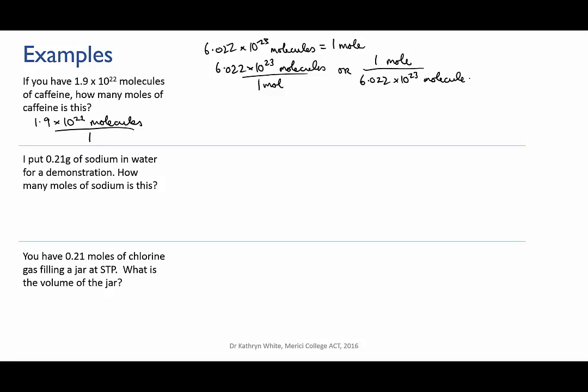We can have 6.022 times 10 to the 23 molecules over 1 mole, or we could write it the other way up. It is completely equivalent either way. Which version you use depends on which unit you're trying to cancel out in your calculations. Here we want to cancel out molecules and be left with moles, so we're going to choose the version that has the 6.022 times 10 to the 23 molecules on the bottom. We can then cancel out the molecules and we're left with moles.